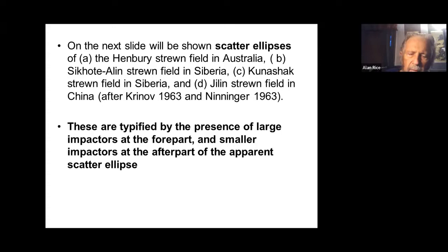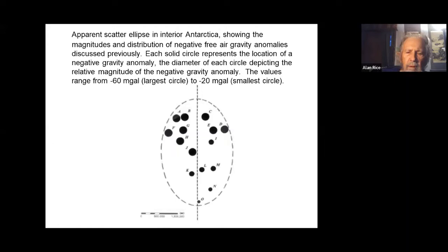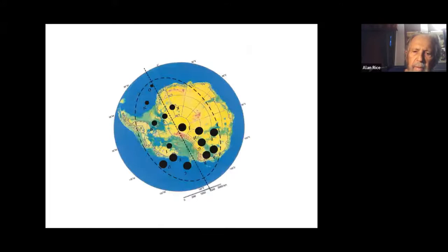We'll look at scatter ellipses of strewn fields in Australia, Siberia, and China. The large impact is at the fore part and smaller impacts at the after part of the apparent scatter ellipse. These are from known impact sites elsewhere. This is what they look like with the apparent scatter ellipse drawn from the gravity measurements inferred in Antarctica. Each image represents a gravity negative anomaly, a possible hit.